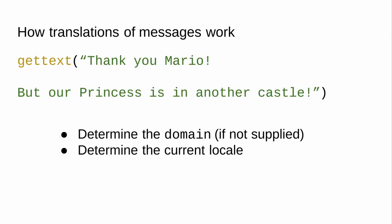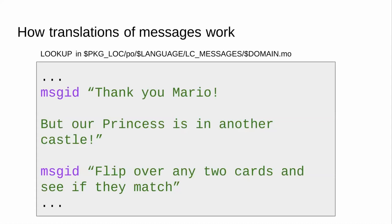Where is this message being called from? If it's being called from a package's namespace, it will look up the translations for that package. After figuring out which package we're in, what language we need to translate to, and which domain we're looking at, we find the corresponding .mo file. In this .mo file there are correspondences between a message and its translation — it's a data structure that makes it easy and fast to go from the input message ID to the output message string, which is the translation.